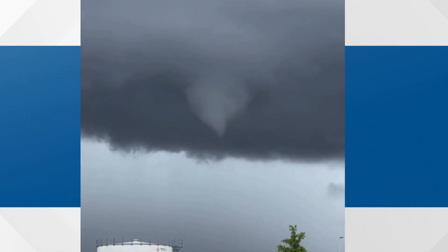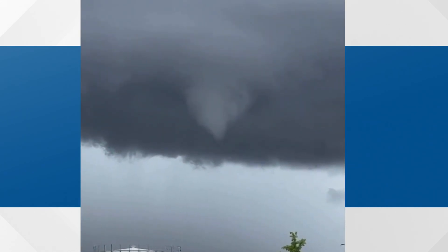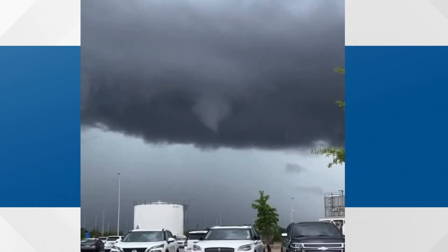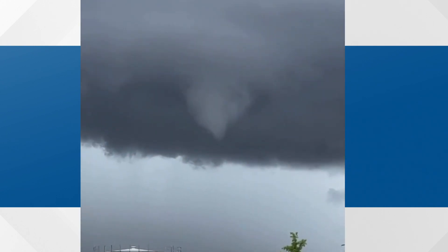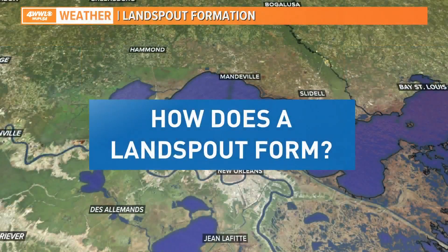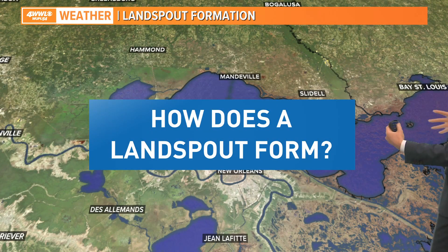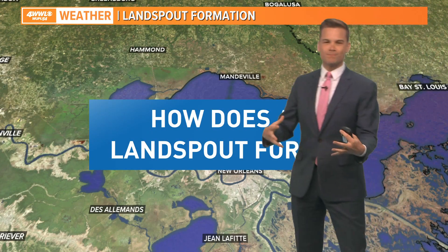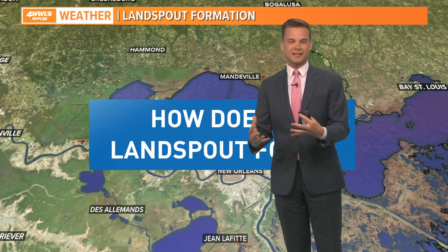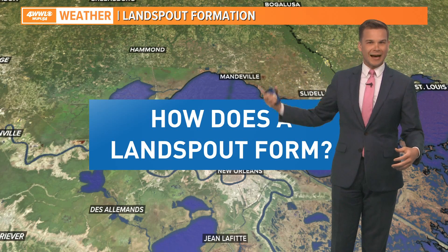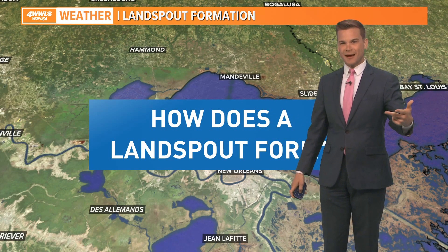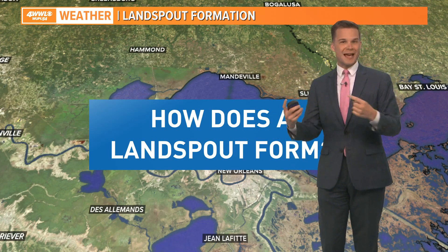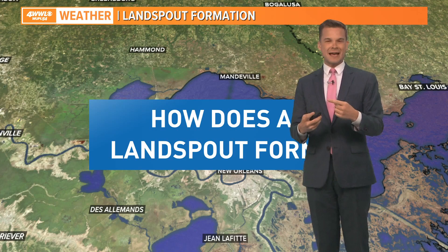This was from a friend as he got off the plane at MSY, and you could see the funnel there. You could see it spinning down. But the difference between a land spout and a tornado is how it develops. A land spout actually starts from the ground, whereas a tornado starts from the cloud and the rotation of the storm. The land spout starts from rotation happening at the ground.